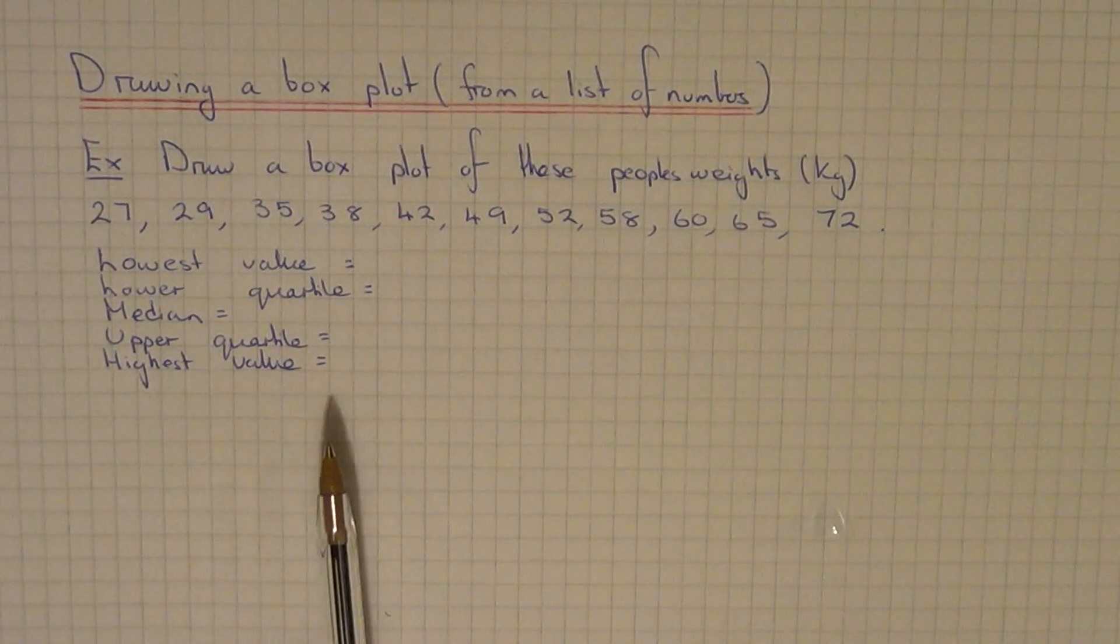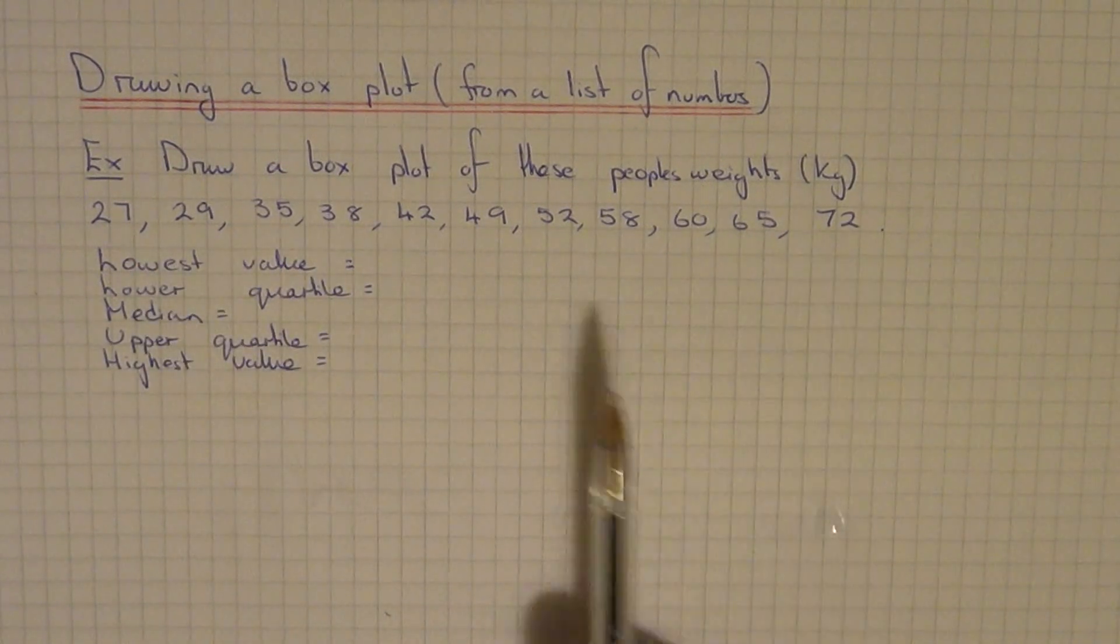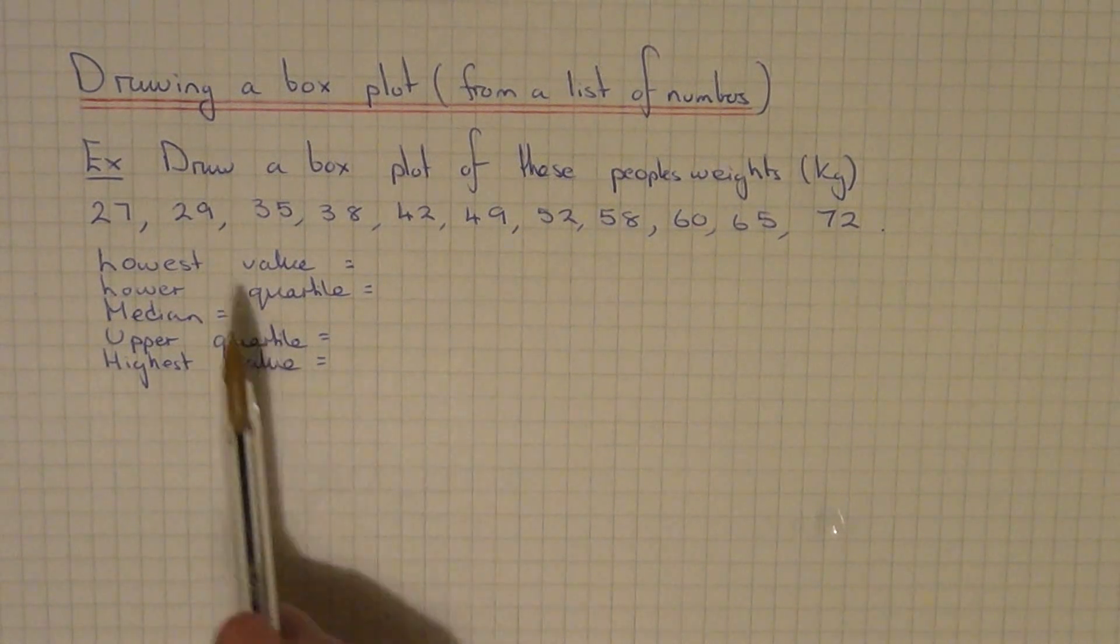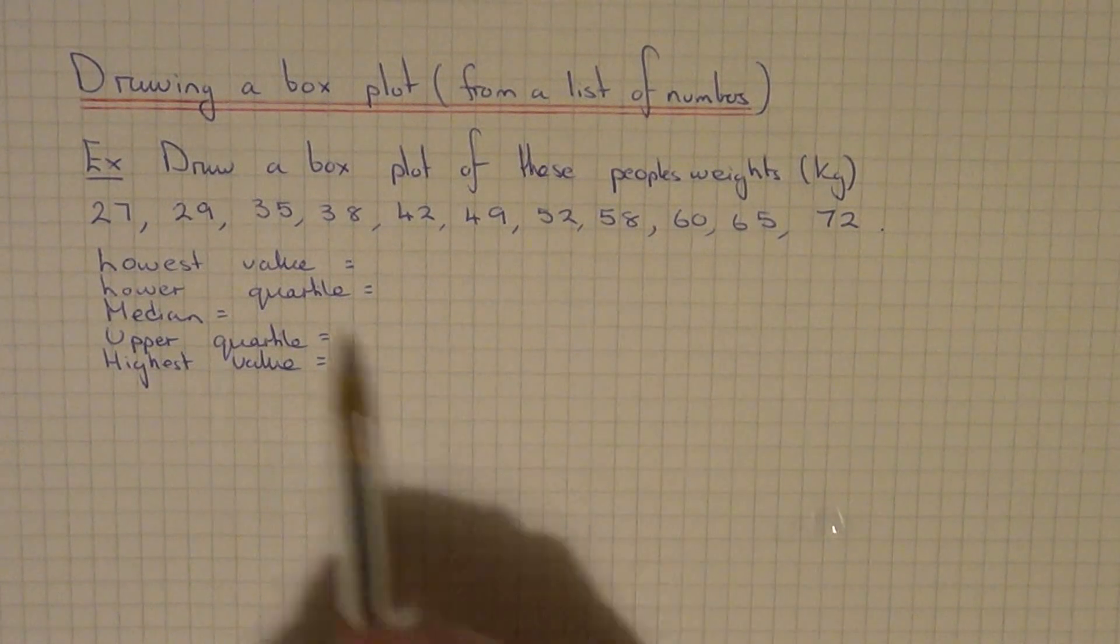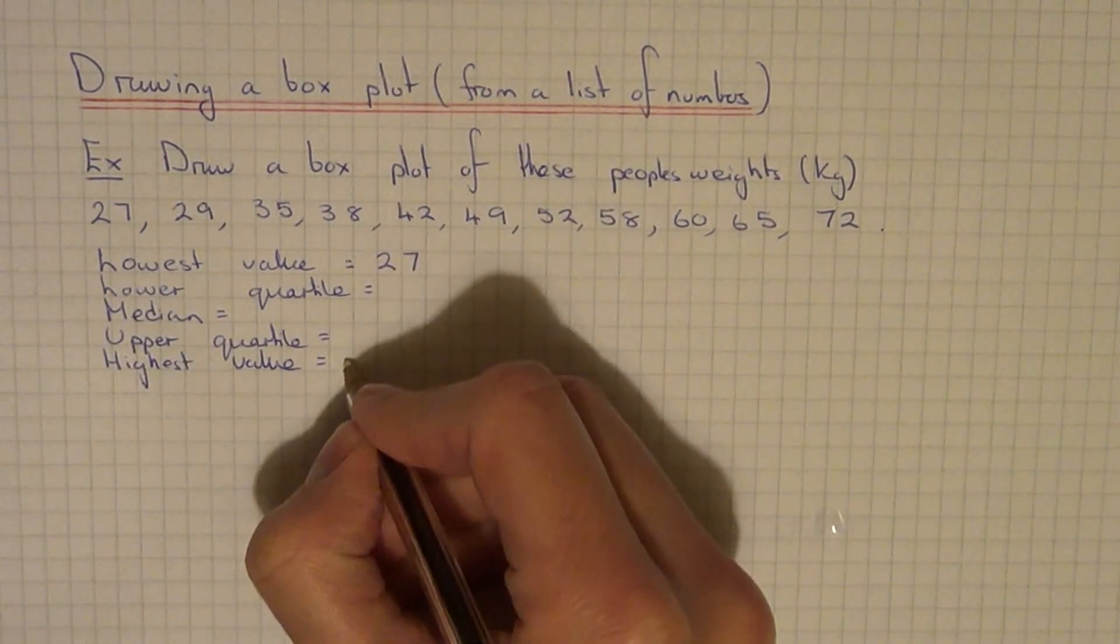Let's take a look at this example. We have the weights of 11 people, all in kilograms. First, let's write down the lowest value and the highest value. The lowest value is 27 kilograms, the highest value is 72.